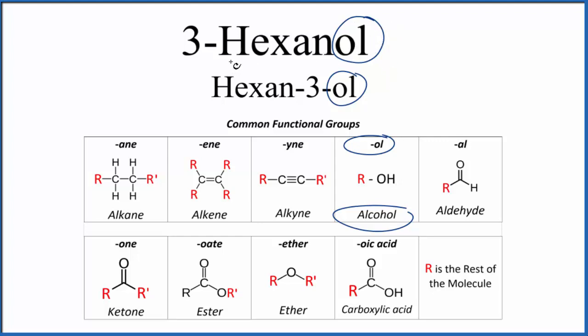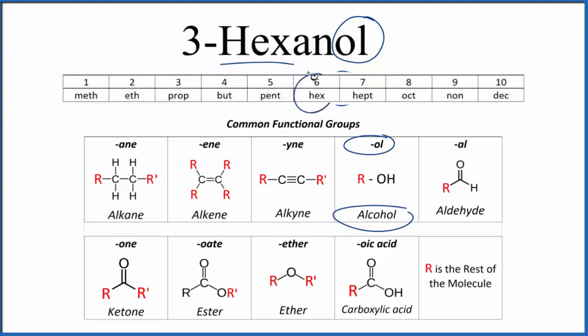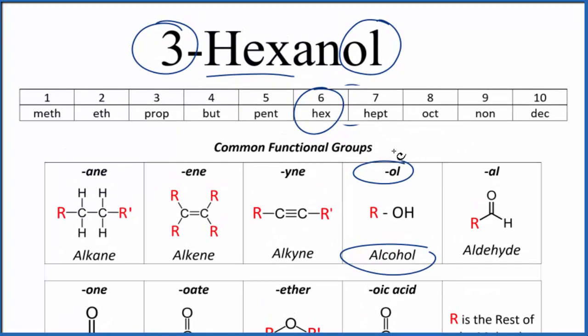Then when we look at hex, hex is a prefix for six. So we're going to have six carbon atoms in a line, and then we're going to have an OH group on it. That OH group is going to be on the third carbon. So let's put up a chain with six carbon atoms, then we'll add our alcohol group.